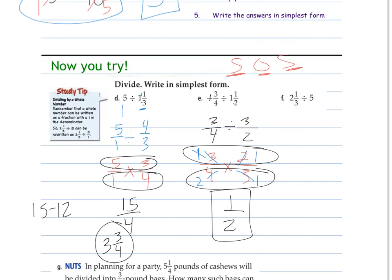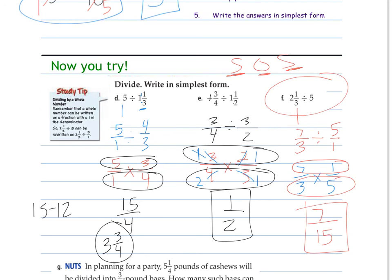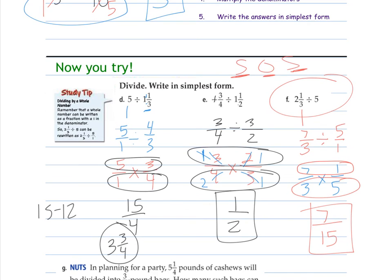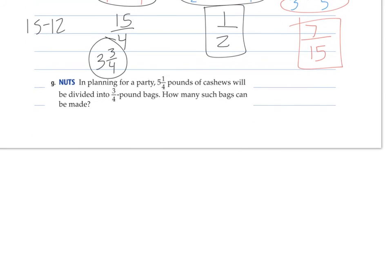Over here again, two numbers that need to be changed. Two and one third becomes seven over three. Five becomes five over one. Keep the first number. Multiply by the reciprocal. Nothing to cross cancel. So I multiply across. Numerators. And denominators. Steps guys, that's all it is.